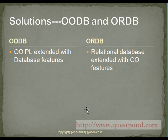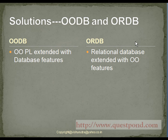To solve this problem, OODB and ORDB came into the picture. OODB stands for object-oriented database, while ORDB stands for object-relational database. In the case of OODB, a programming language is extended with database features such as atomicity and persistence, giving us the benefits of both OODB and relational DB. On the other hand, in the case of ORDB, we extend the relational database to provide OOP features like inheritance and polymorphism.